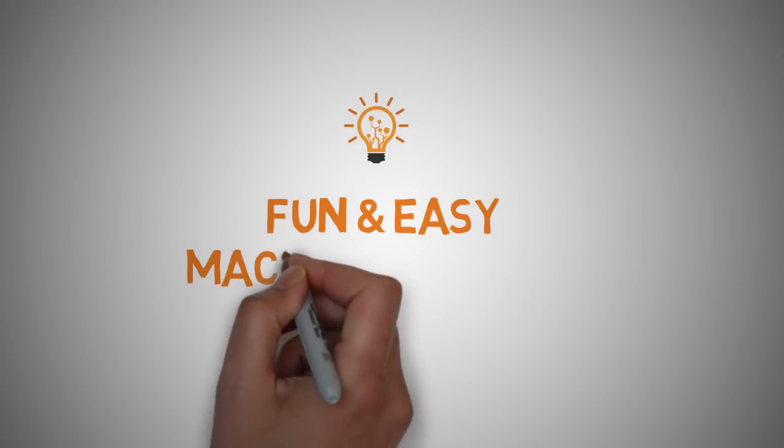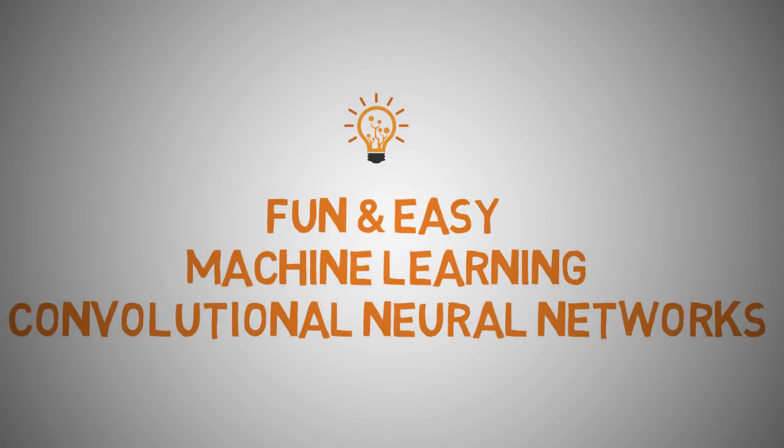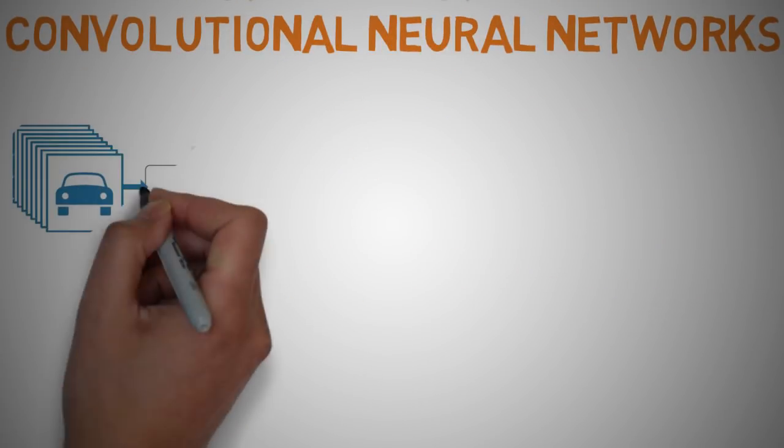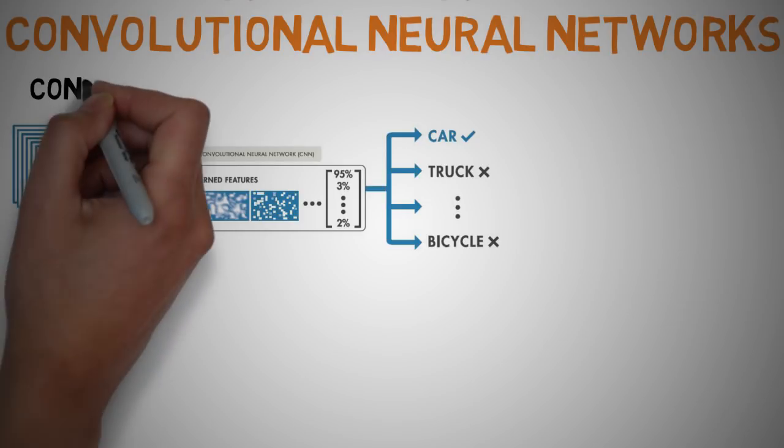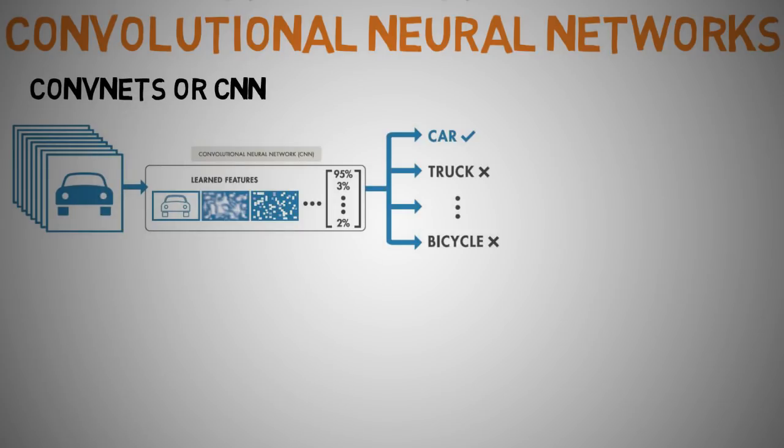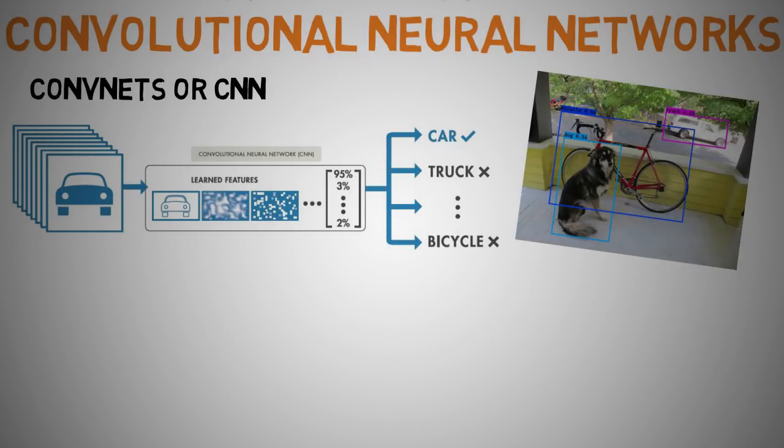Hey guys and welcome to another fun and easy machine learning tutorial on convolutional neural networks. So what are convolutional neural networks and why are they important? Well, convolutional neural networks or convnets, also known as CNNs, are a category of neural networks that have proven very effective in areas such as image recognition and classification.